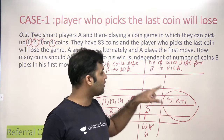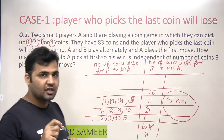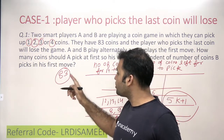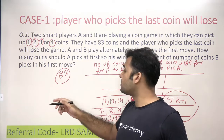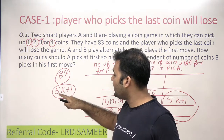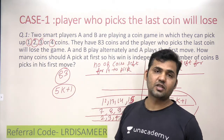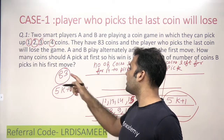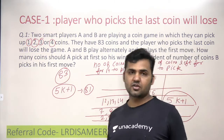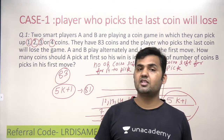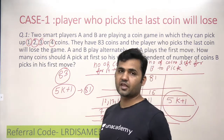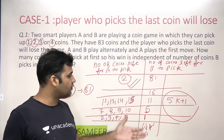Now applying this to 83 coins: A needs to find the largest 5k + 1 number less than 83. That number is 81. So A wants to leave 81 coins for B after the first move. Since 83 − 81 = 2, A should pick 2 coins in the first move. This guarantees A's win regardless of how many coins B picks thereafter.